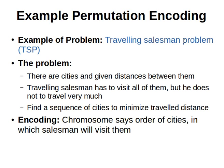The traveling salesman problem states that there are cities and all cities are connected to each other. For example, if we have three cities A, B, and C, then A is connected to B and C, B is connected to A and C, and C is connected to B and A. From any city you can go to any other city. With only three cities it's simple, but with 30 or 50 it becomes much more complicated.